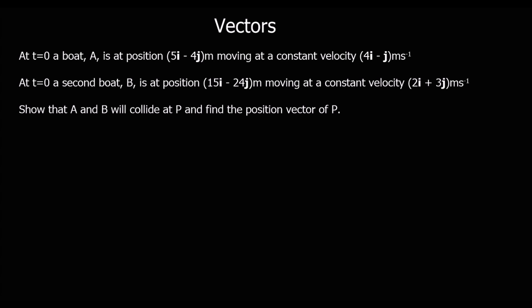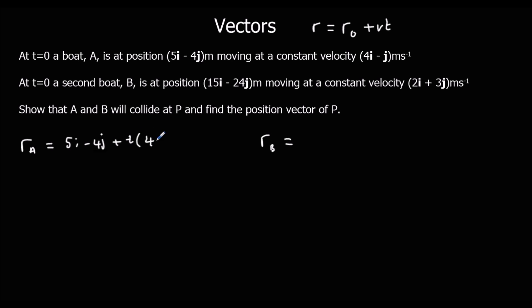Here's another similar question — pause the video and give it a go to see if you can find where A and B collide. Using r = r₀ + vt: for boat A, the initial position is 5i minus 4j and velocity is 4i minus j. For boat B, the initial position is 15i minus 24j and velocity is 2i plus 3j.